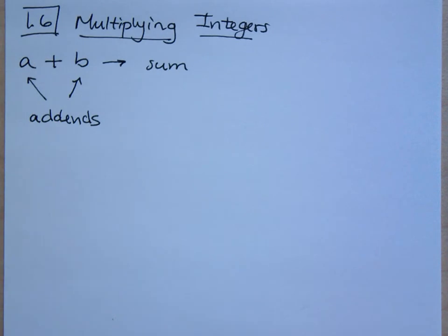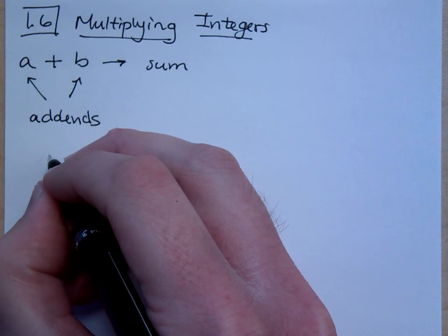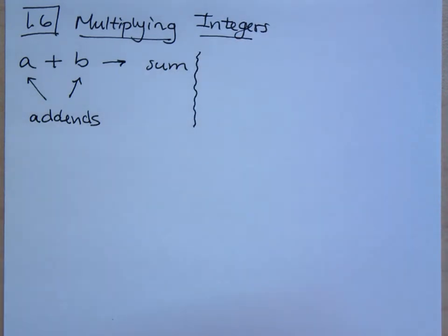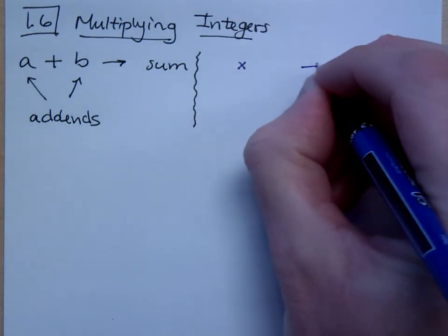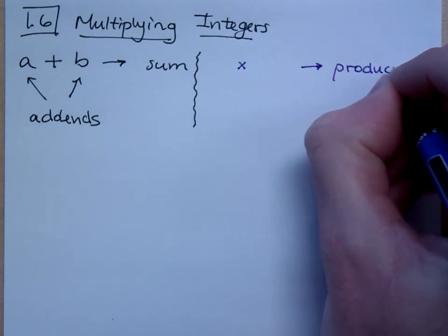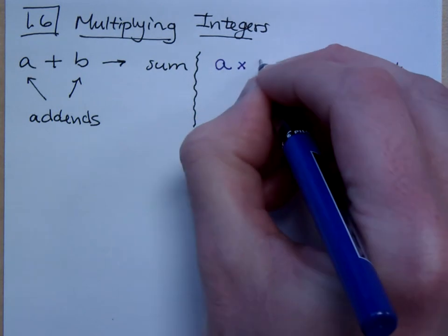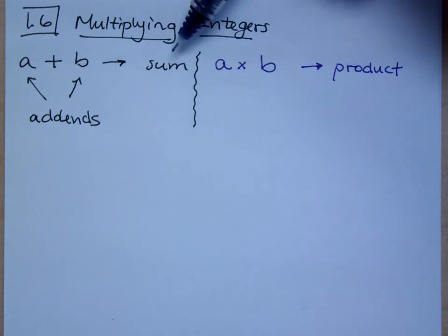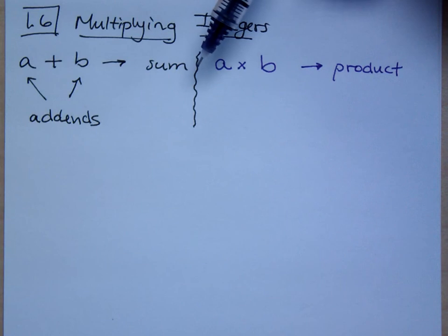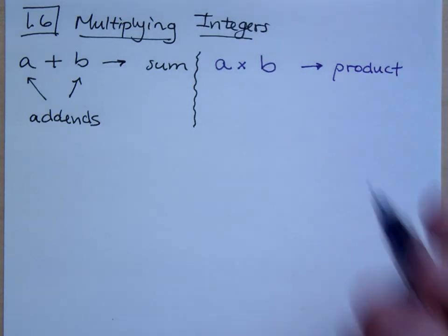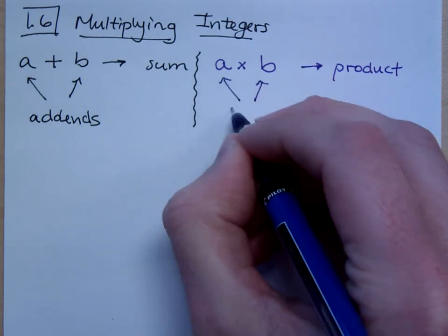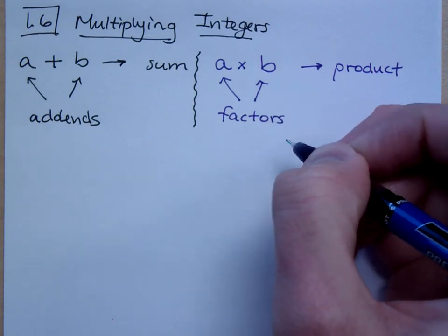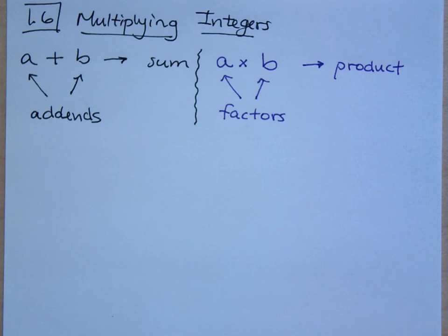If I'm multiplying integers, we're talking about multiplication, and the fancy word we use here is the word product. So I'll say A times B — the answer is the product. The result from adding numbers is the sum; the result from subtraction is the difference. With a product, the two pieces that make up a product, these guys are called factors.